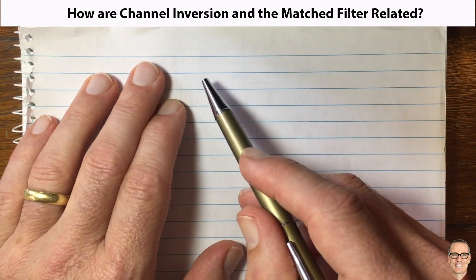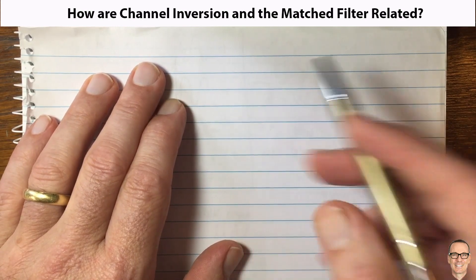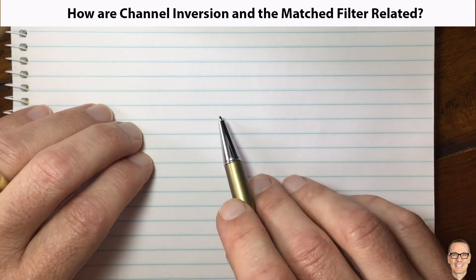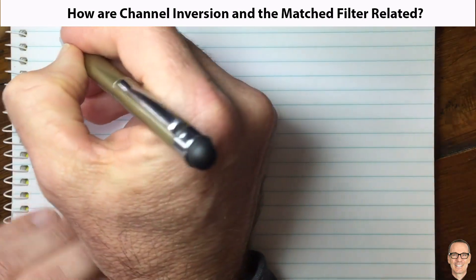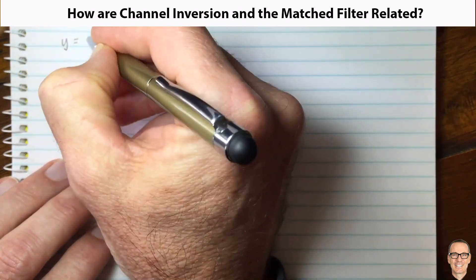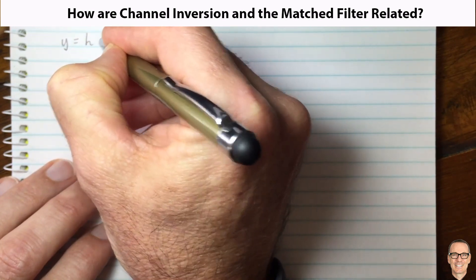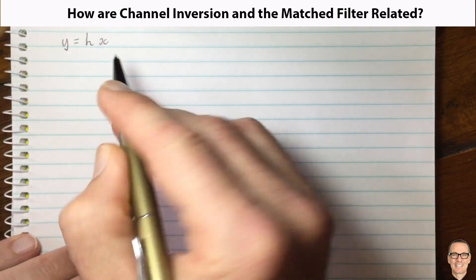Looking at the matched filter and the channel inversion filter, I'm going to use a digital communications example. So let's start with a scalar case where we've got data x being sent as a symbol.